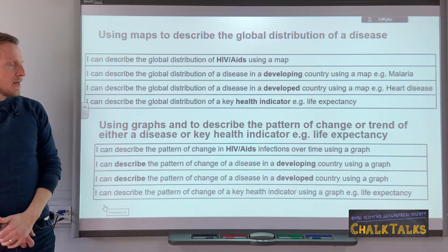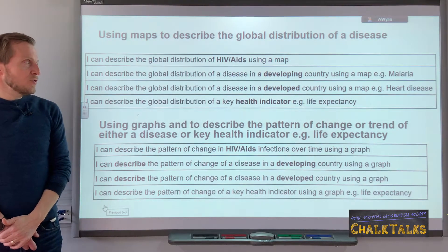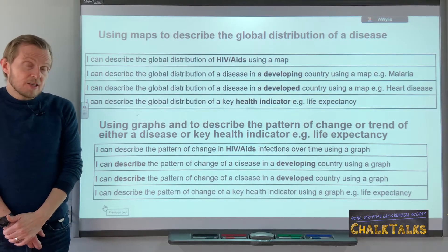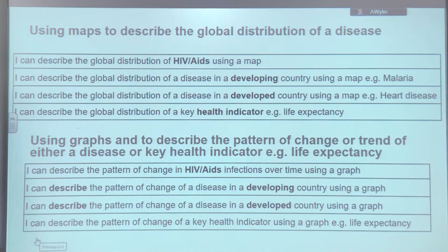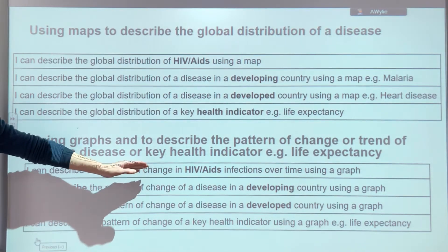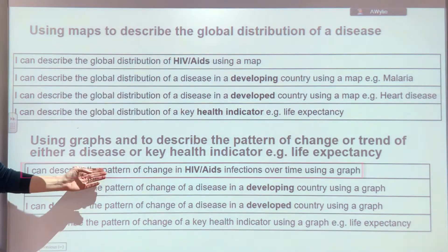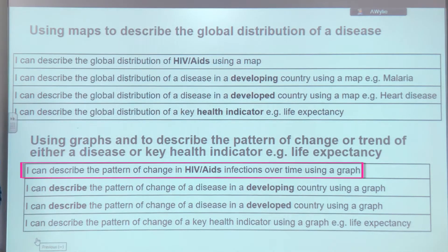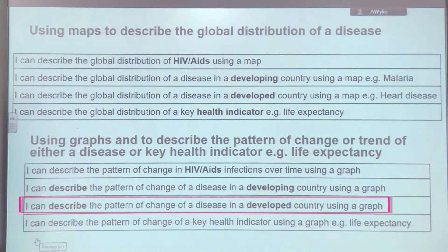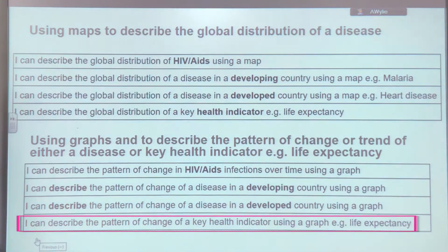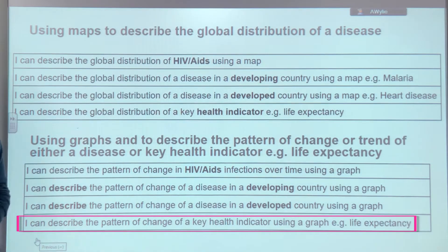In the second main theme, you need to be able to use a graph to describe a pattern of change or a trend. This could be a line graph or a bar graph. There are four key learning outcomes here. The first three relate to different diseases — for example, a graph showing the change in HIV or AIDS, a graph showing change in a developing world disease like malaria, or a pattern of change for a developed country disease like heart disease. The final one is using a graph to describe a pattern of change for a key health indicator, such as life expectancy.